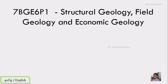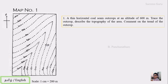Good morning students, this is the practical class for Structural Geology, Field Geology, and Economic Geology. This is lecture number one, covering map numbers one and two. On the left-hand side there is a map — north is always indicated at the top corner. The scale is one centimeter equal to 200 meters. This is a contoured map with a 700-meter contour and a 200-meter contour visible.